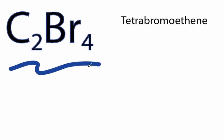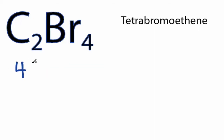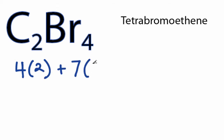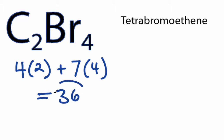For the C₂Br₄ Lewis structure, carbon has four valence electrons. We have two carbons, and bromine has seven, and we have four bromines, for a total of 36 valence electrons for the C₂Br₄ Lewis structure.